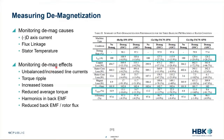Demagnetization has a variety of effects: unbalanced line currents, torque ripple, increased losses, reduced average torque, harmonics in the back EMF, reduced back EMF, and reduced rotor flux.